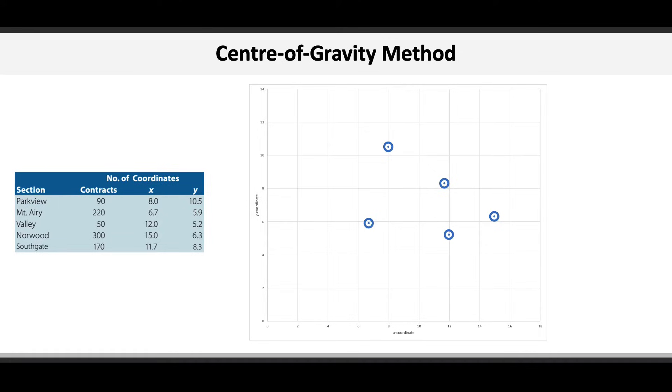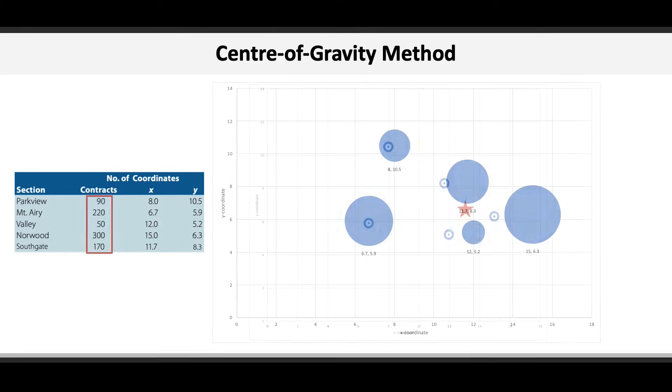The question becomes where do we put the facility that would best serve our customers? We could try to put it near the center of all the sections, or closer to the three sections on the right. Tough call. The problem is that the little data points aren't very helpful, but when we consider the size of each area based on how many contracts there are, we can see where the big sections are and where the small sections are.